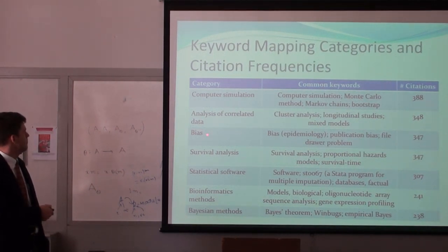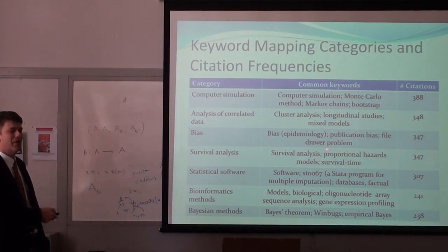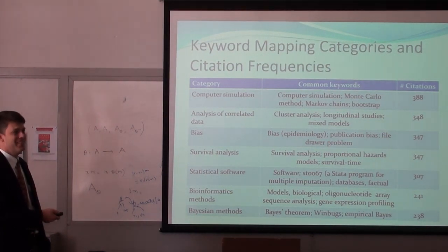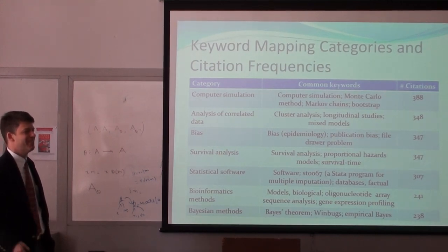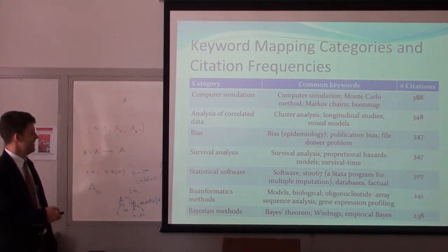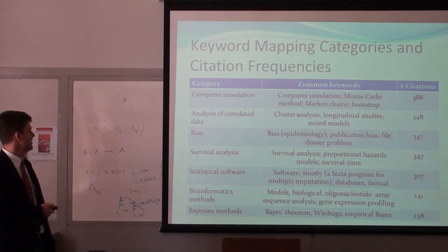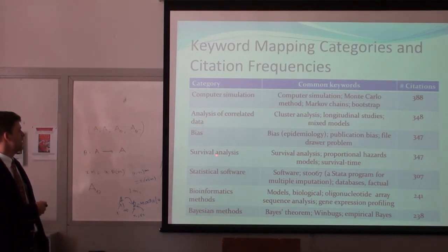Publication bias — also called the file drawer problem, which I like. In other words, you did a study, it didn't come out the way you wanted, so you stick it in the file drawer. Survival analysis is also pretty popular. We have a whole different set of mathematical models when you look at time-to-event outcomes — how long does this patient survive, or how long does this device last in a person?